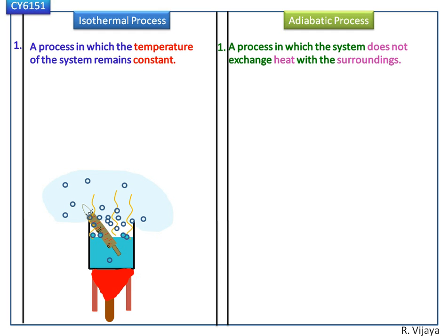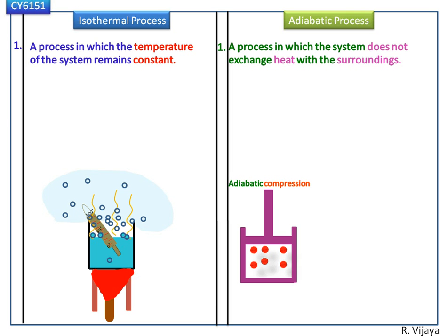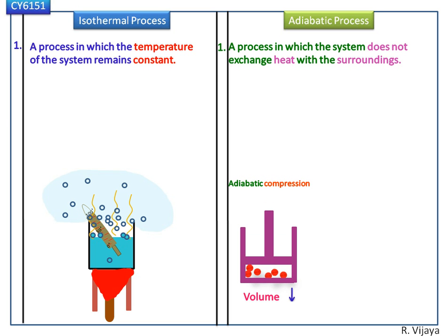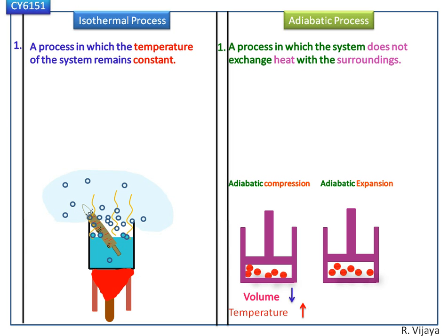Next we see adiabatic process — a process in which the system does not exchange heat with the surrounding. First, consider adiabatic compression: when we compress this insulated frictionless piston, the volume decreases and the temperature increases inside the system. In adiabatic expansion, the volume increases and the temperature decreases.